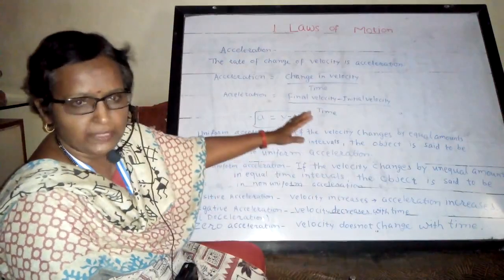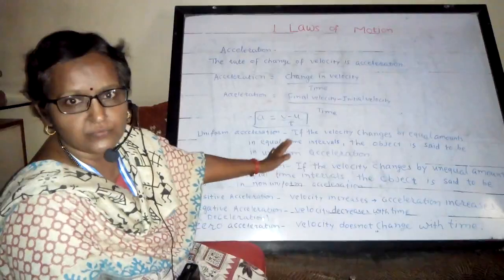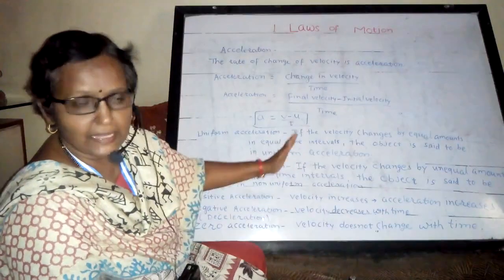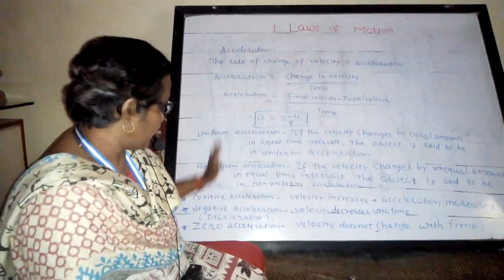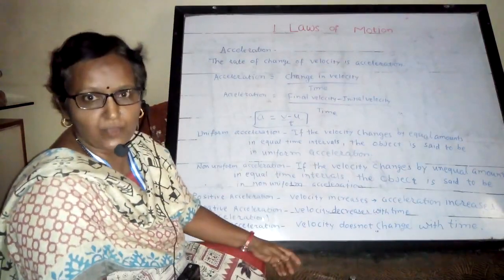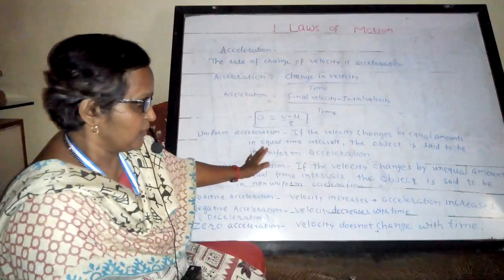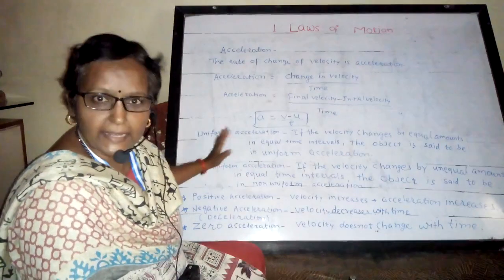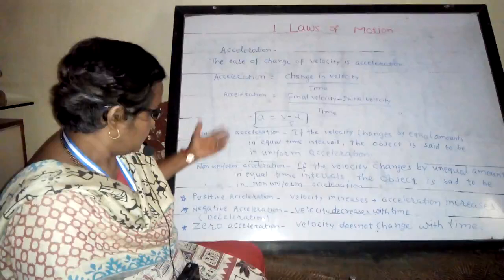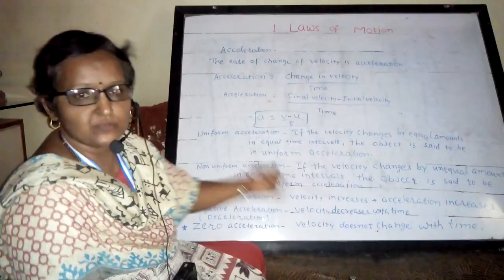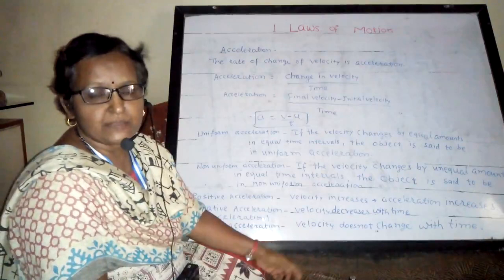There are three more types to consider: positive acceleration, negative acceleration, and zero acceleration. If you are going by vehicle and your velocity is increasing with time, that change in velocity — where acceleration increases as velocity increases — is called positive acceleration. Here the motion is in the direction of velocity or speed.